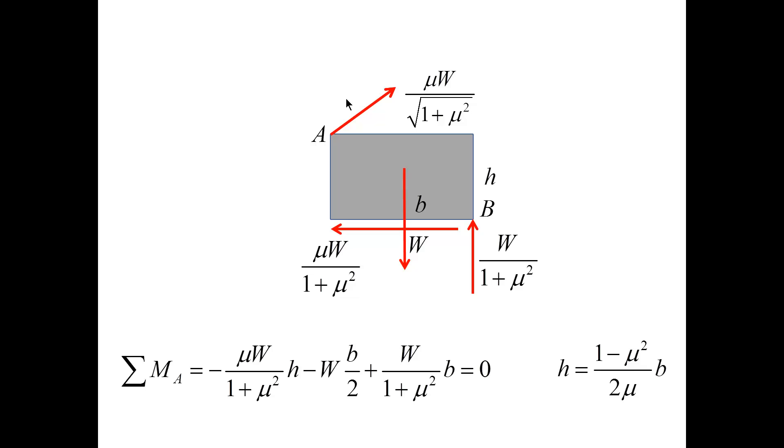I want to pay your attention that if mu is negligible, it means h becomes infinite. What this means is that gliding is very easy and you do not tip the block. In contrast, if gliding is hard, meaning there is large friction, the block is more likely to tip.